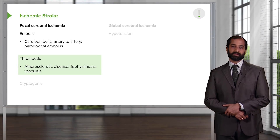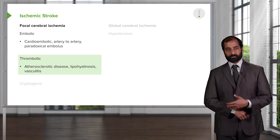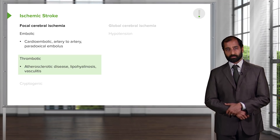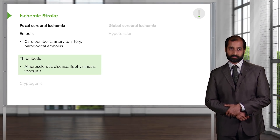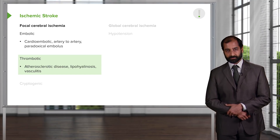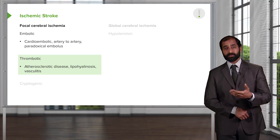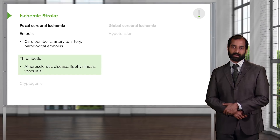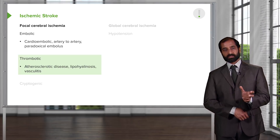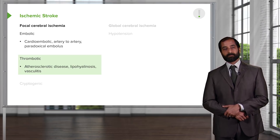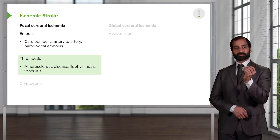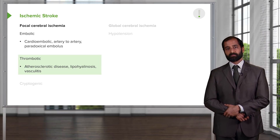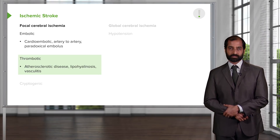Or the patient has vasculitis — something like temporal arteritis, granulomatosis with polyangiitis (formerly known as Wegener's), microscopic polyangiitis, or even IgA vasculopathy (formerly known as Henoch-Schönlein purpura). All of those conditions have something in common: they cause inflammation in the blood vessel, which then compromises the caliber of the lumen, potentially resulting in a focal type of ischemic stroke.